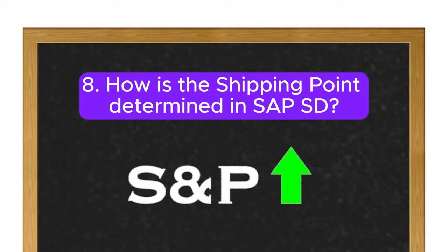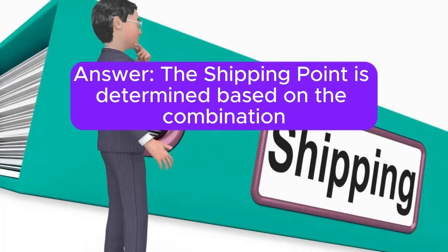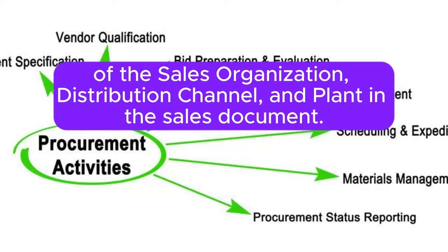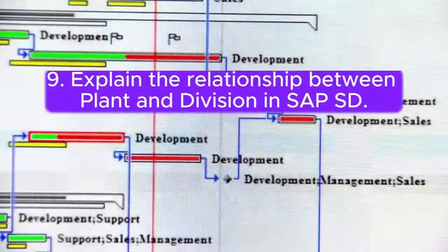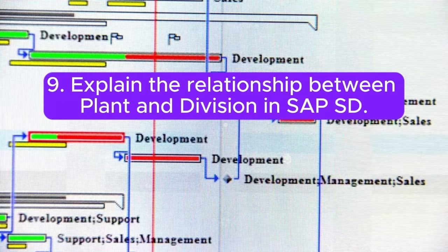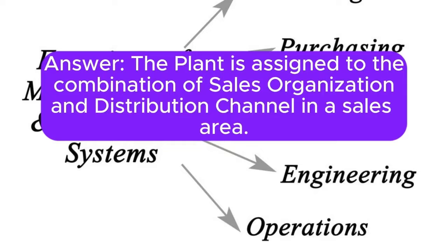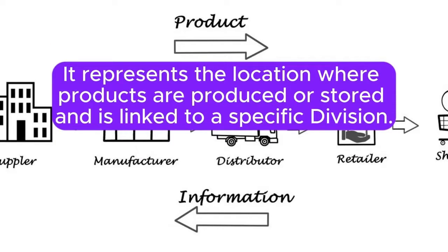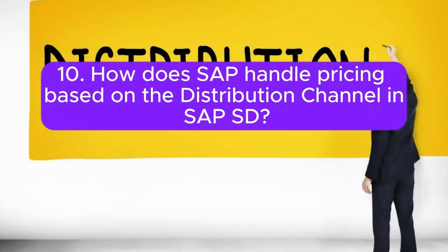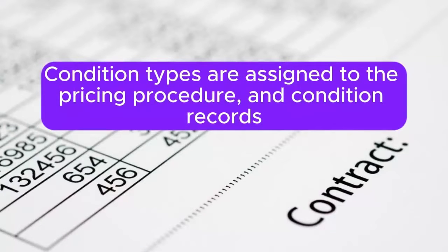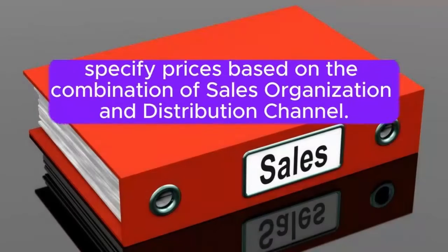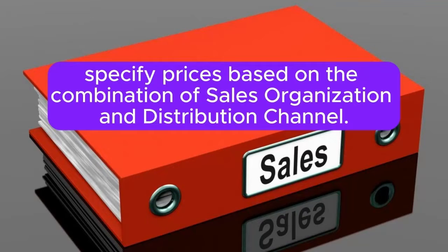Question 8: How is the shipping point determined in SAP SD? Answer: The shipping point is determined based on the combination of the sales organization, distribution channel, and plant. In the sales document, it represents the location where goods are shipped. Question 9: Explain the relationship between plant and division in SAP SD. Answer: The plant is assigned to the combination of sales organization and distribution channel in a sales area. It represents the location where products are produced or stored and is linked to a specific division. Question 10: How does SAP handle pricing based on the distribution channel? Answer: Pricing based on the distribution channel is configured using condition records. Condition types are assigned to the pricing procedure, and condition records specify prices based on the combination of sales organization and distribution channel.